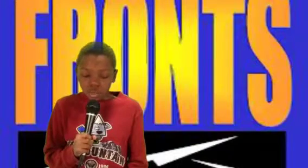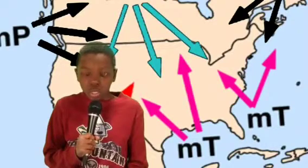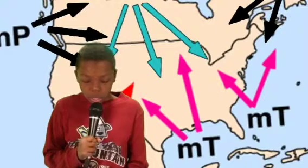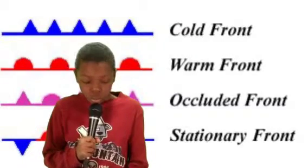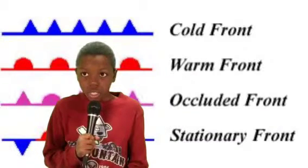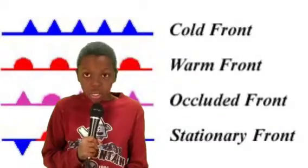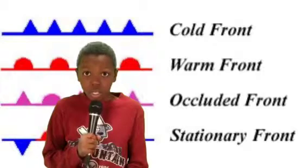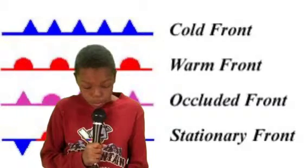Here comes a Maritime Tropical warm front. Maritime means moist. Tropical means that it's warm. A weather front is a boundary separating two air masses of different densities from each other. There are different types of fronts: the stationary front, the warm front, the cold front, and the occluded front.